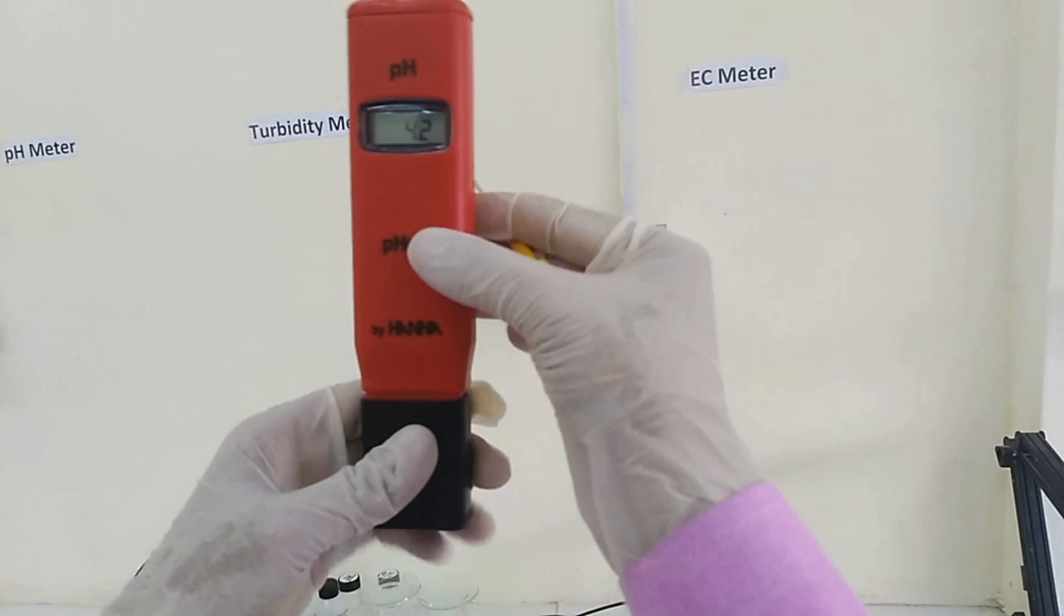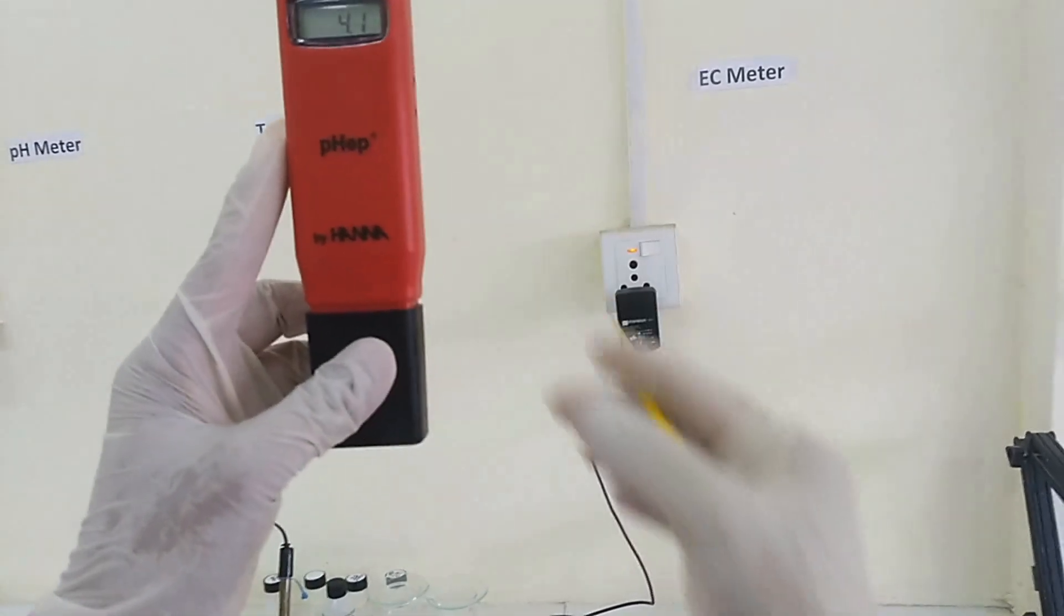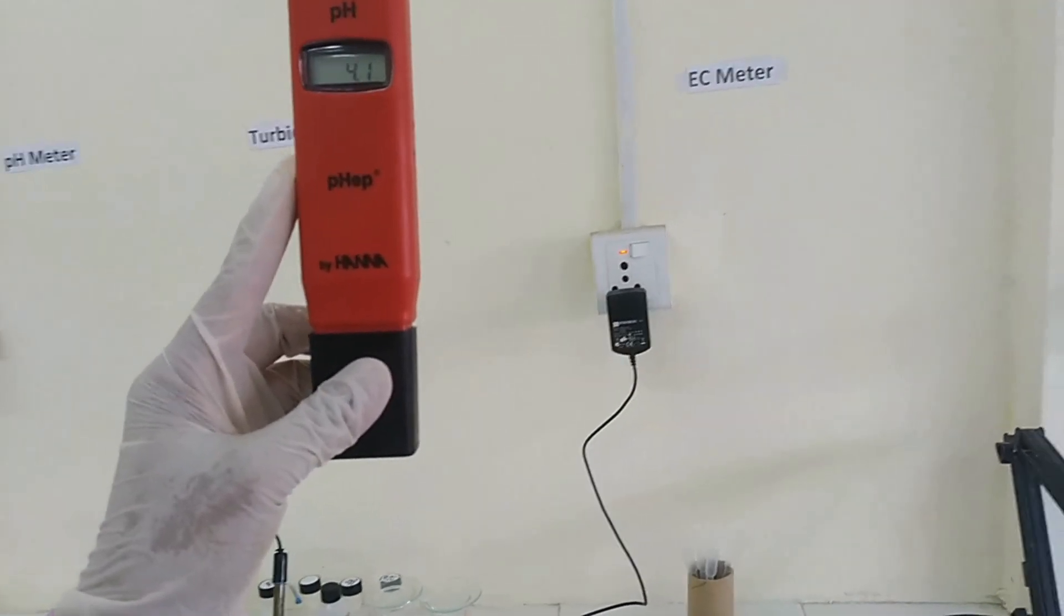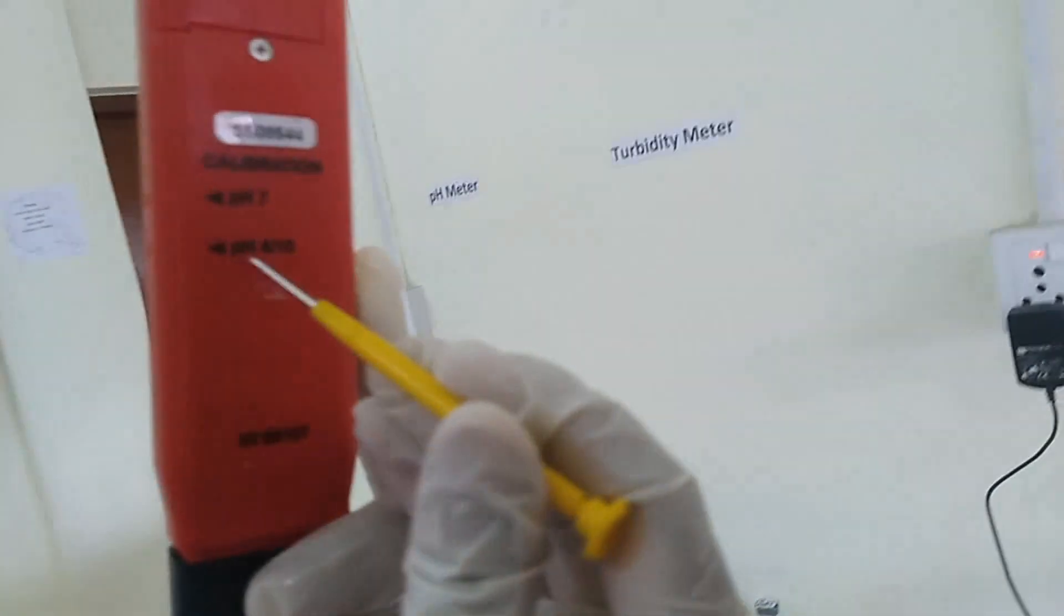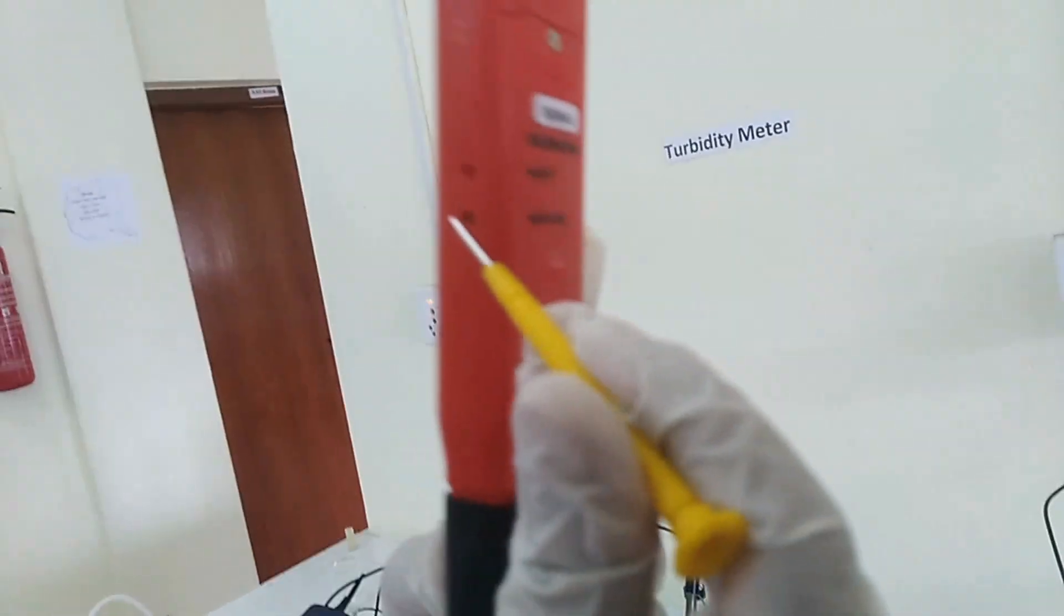Insert screwdriver to the hole corresponding to pH 4 or 10. Slowly rotate screwdriver and make value 4. Note that clockwise rotation increases the value and anticlockwise decreases.